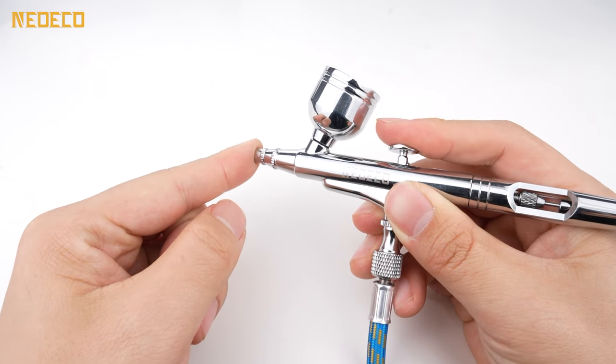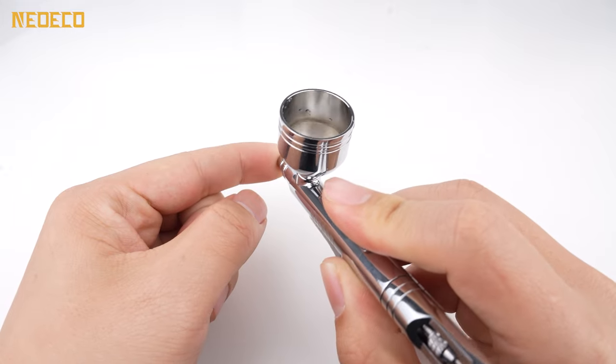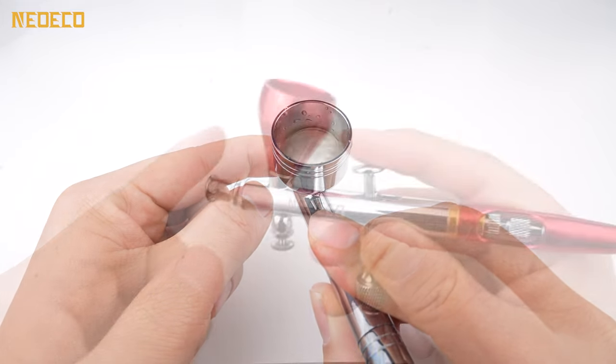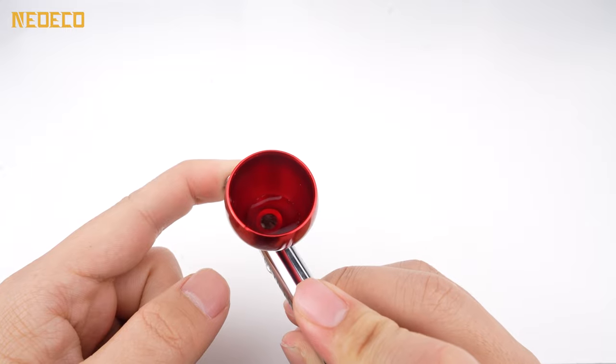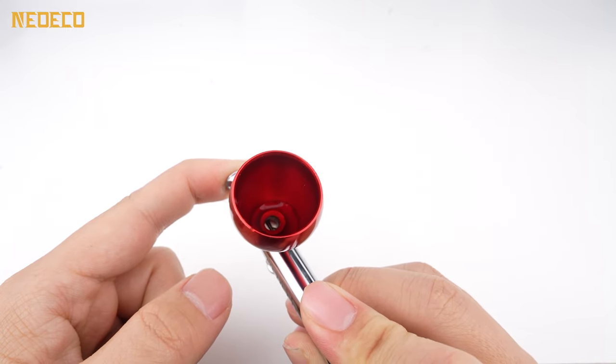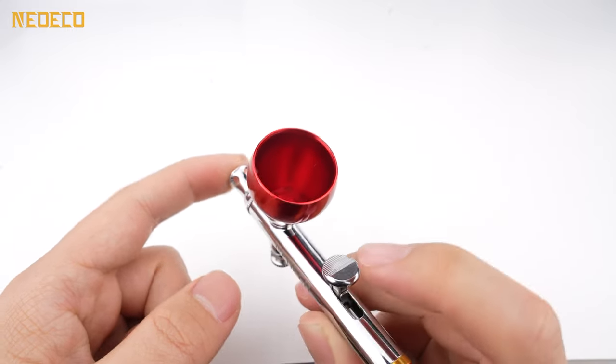While backflow may pose an inconvenience, it also serves a purpose in aiding airbrush cleaning. For certain models like the SJ83, some users may encounter airbrushes that cannot be backflowed by simply blocking them, due to the presence of holes allowing air passage.